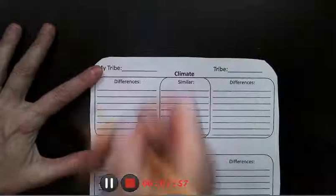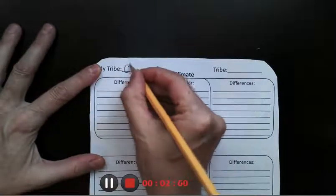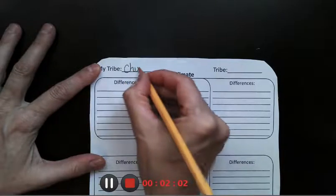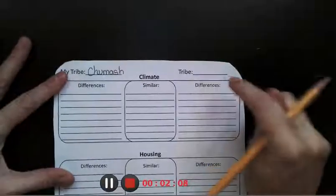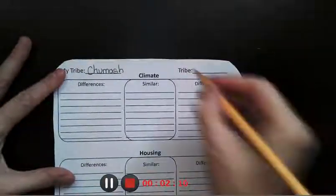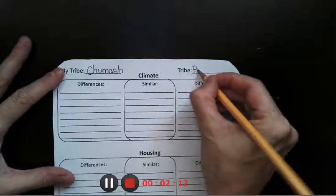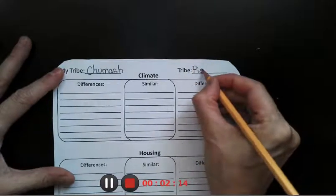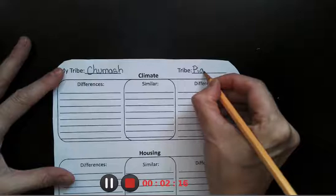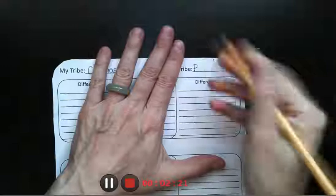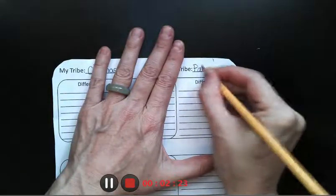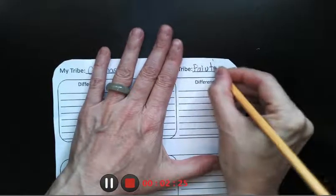So up at the top you're actually going to write the name of your tribe. My tribe is Chumash. And then choose one of the other tribes to compare to. So I'm going to choose the Paiute. I spelled that wrong. Go figure. See, teachers make mistakes too. There we go. Got it right this time.